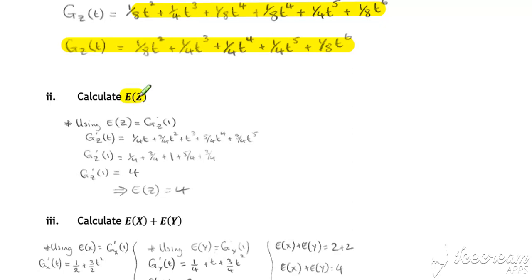If we now want the expected value of our combined random variable, to find our expectation, we find G dash of Z, so we differentiate once, substitute t equals 1, evaluate, and we get the expected value of Z to be equal to 4.